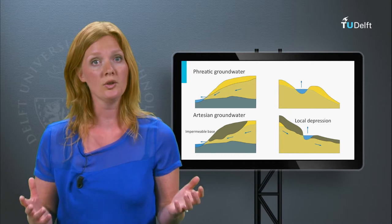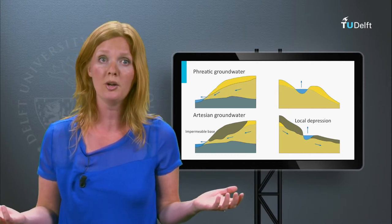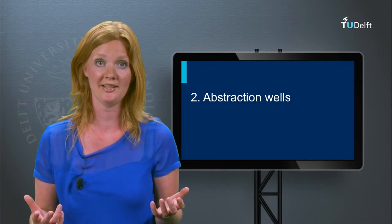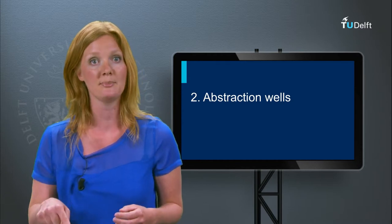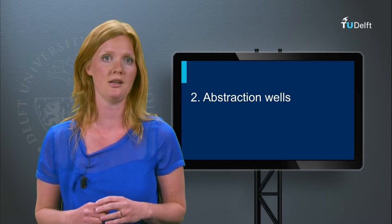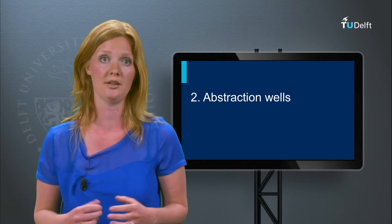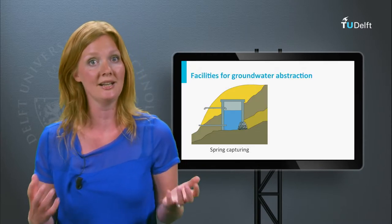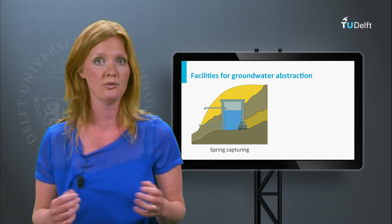So, groundwater is available under different circumstances. But how do we get it above ground? Well, sometimes groundwater can surface spontaneously as a spring, and sometimes it has to be abstracted from great depths. For example, in the Netherlands wells go down 200 meters, while in arid regions wells are found deeper than 1500 meters. Facilities for groundwater abstraction can be relatively simple for freely discharging groundwater, called spring capturing, but also almost as complicated as drilling at extreme depths.